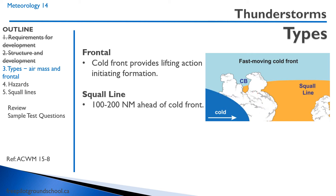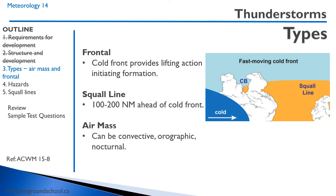You can also have a squall line. A squall line is typically 100 to 200 nautical miles ahead of a cold front, and it's the fastest moving type of thunderstorm. Thirdly, we have air mass thunderstorms, which can be divided into convective, orographic, and nocturnal thunderstorms.